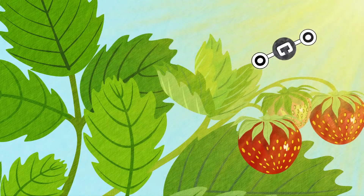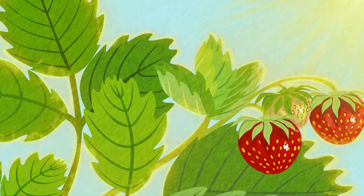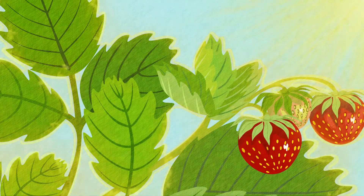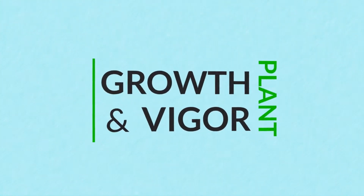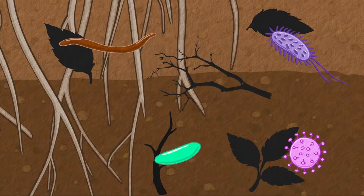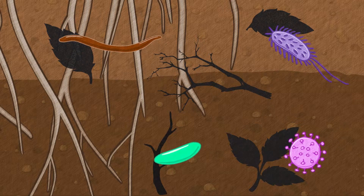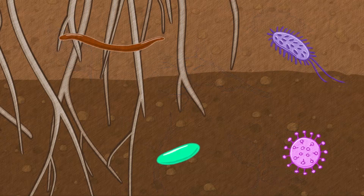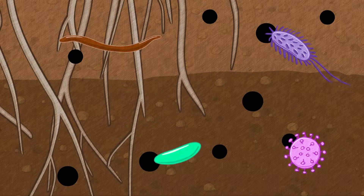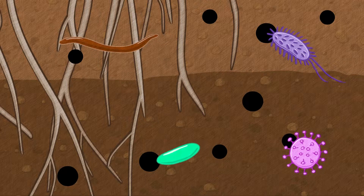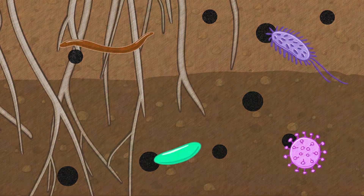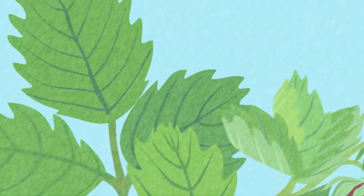Plants obtain carbon through photosynthesis. This process requires the plant to spend a great deal of energy processing carbon, and this carbon is essential for plant growth and vigor. Microbes also need carbon, which they obtain by decomposing organic matter found in soil or by breaking down large carbon molecules added to the soil. This process of breaking down organic matter and other soil-applied carbon also requires a great deal of energy and time.